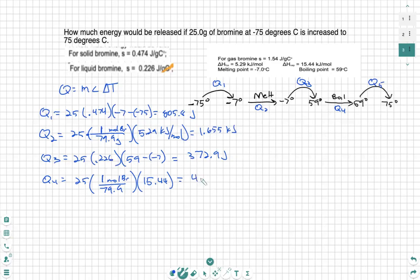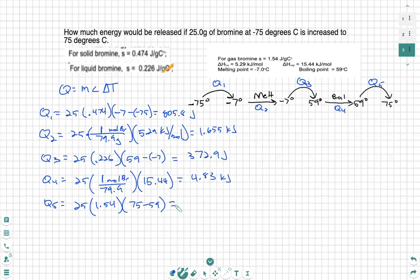And I get 4.83 kilojoules. Last phase to define is Q5, which is our last temperature change. We'll have our mass multiplied by our specific heat, which is given right here, 1.54 joules, times the temperature change, which is 75 minus 59. We see 25 times 1.54 times 75 minus 59 is equal to 616 joules.